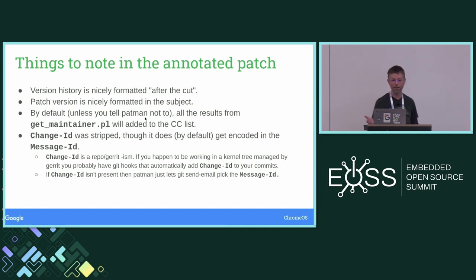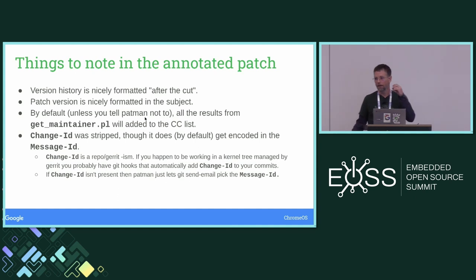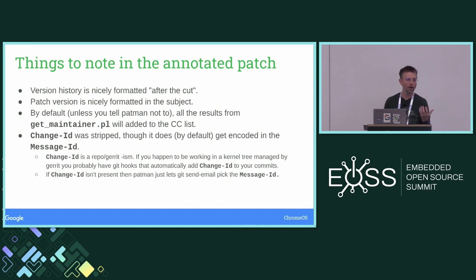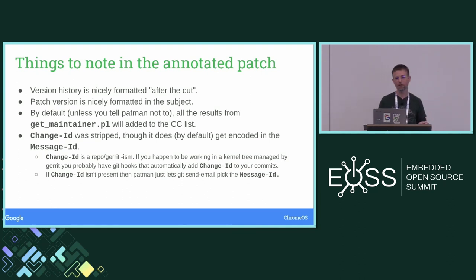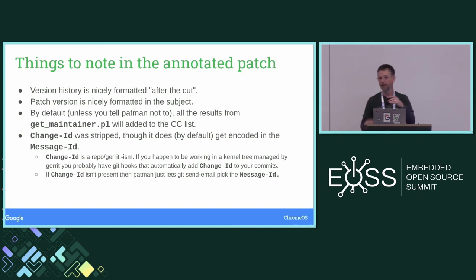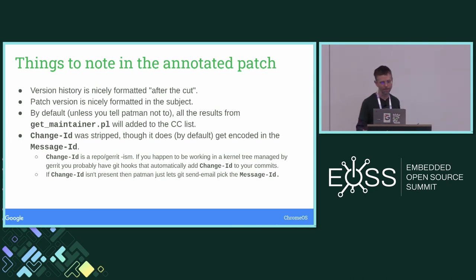Patman by default will call get_maintainer for you. In B4 you can also have it call get_maintainer and populate your to and CC lists. With Patman, you can put to's and CC's explicitly if you want to, but in addition Patman will call get_maintainer on each patch and send that patch to anyone get_maintainer identifies. You can turn that off, but that's the default.